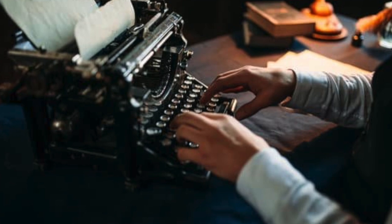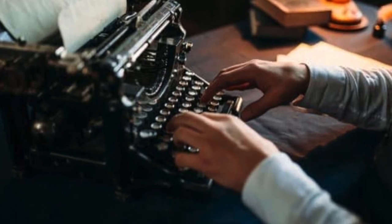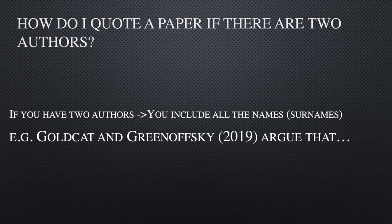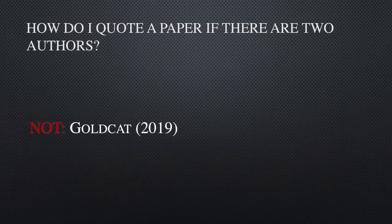But what do you do if there are two authors? How do you cite them? If you have two authors, you include all the surnames. For example, 'Goldcat and Grinovsky 2019 argue that,' and you move on with what they argue. You don't just put the first surname — you don't say 'Goldcat 2019.' It's important that you include both names.